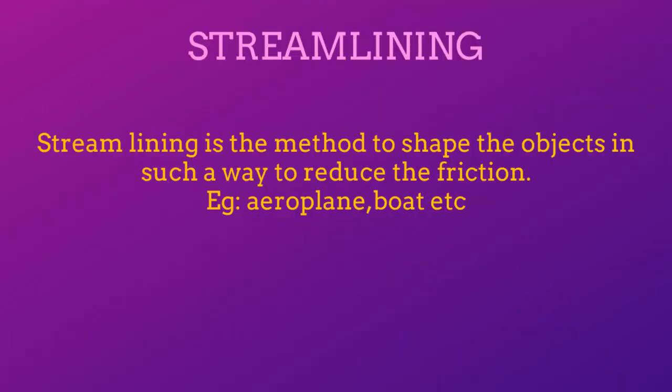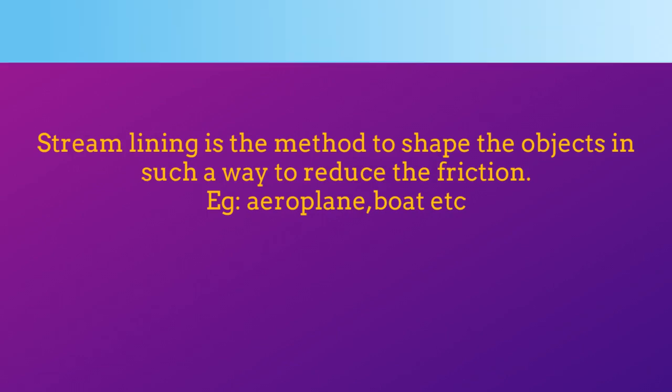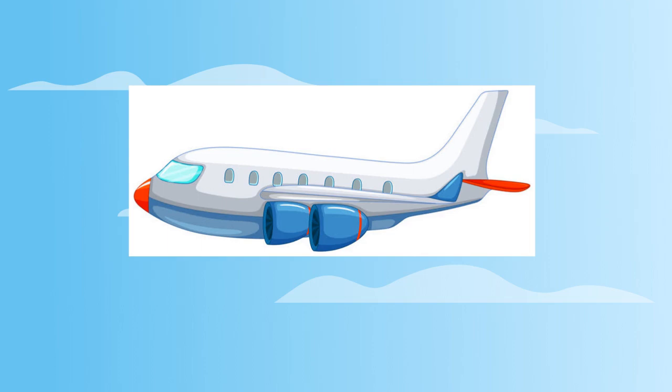Streamlining means giving shape to the objects so that they can reduce friction. The front side of an aeroplane is designed in such a way to reduce friction due to air.